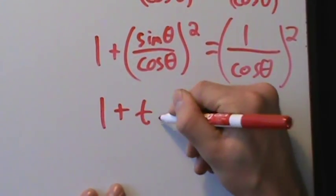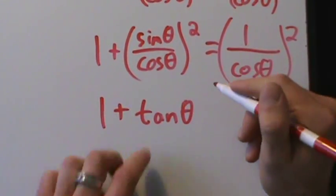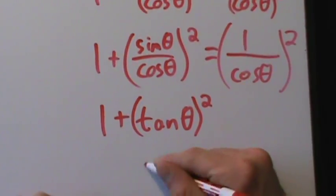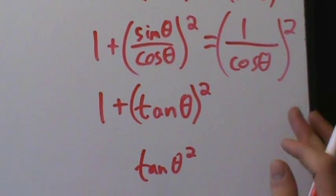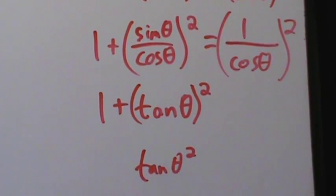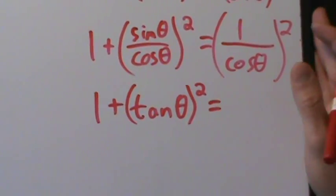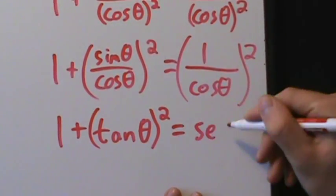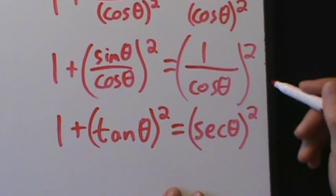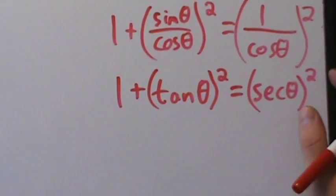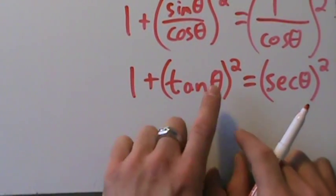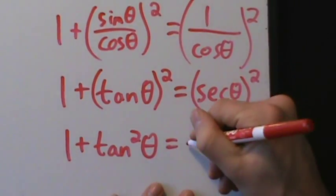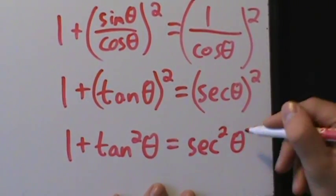Now, sin θ/cos θ is the tangent of theta — that's one of the quotient identities from the last video. Be very careful with the parentheses here. And 1/cos θ is the reciprocal of cosine, which is the secant of theta. So we have 1 + tan²θ = sec²θ. Dropping the parentheses and using the shorthand notation, this is written as 1 + tan²θ = sec²θ.